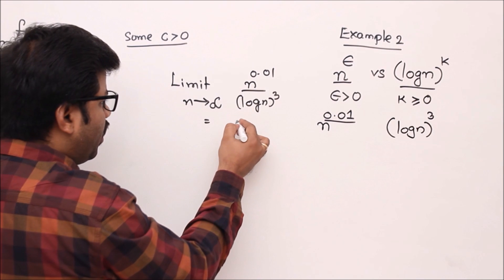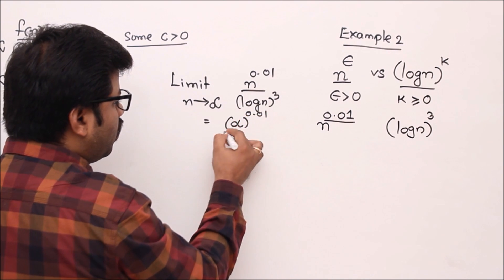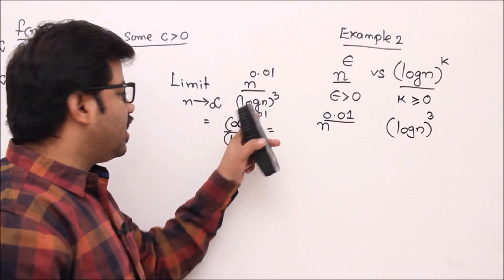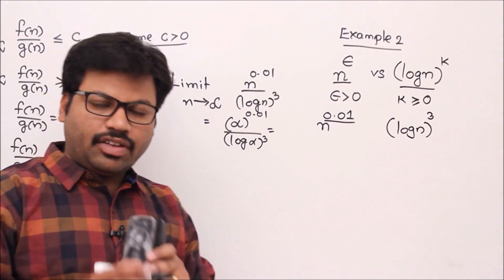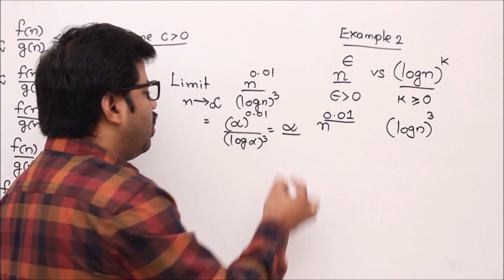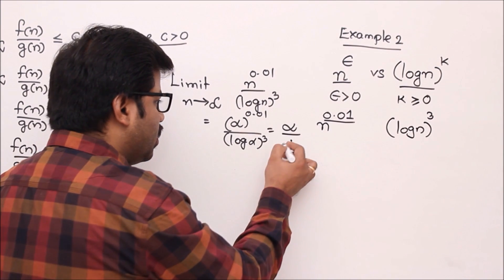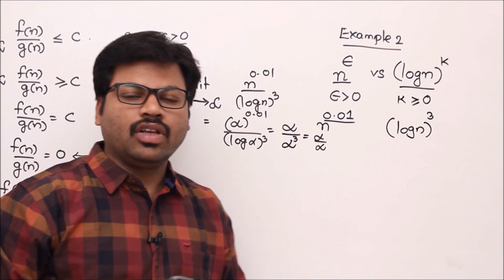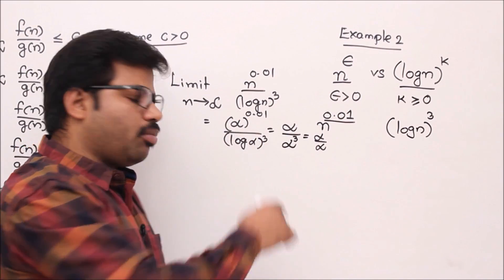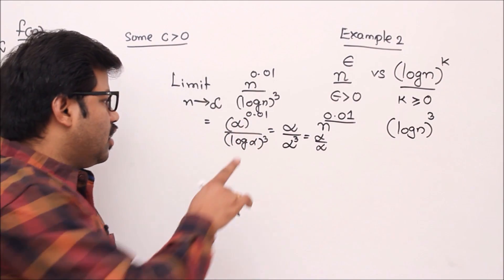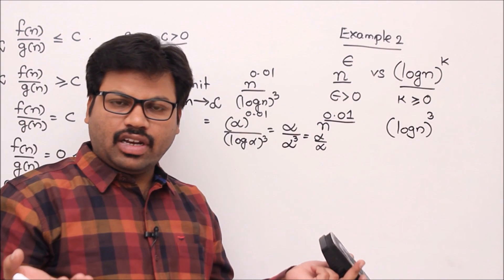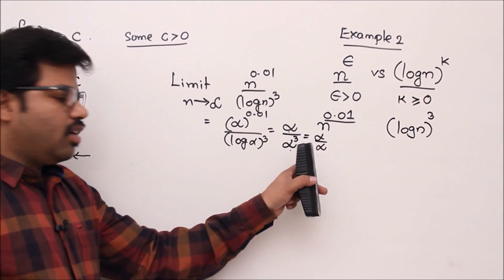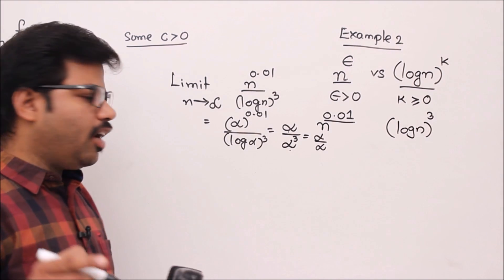Applying n = ∞: ∞^0.01 is infinite (any significant positive power of infinity is infinite), and (log ∞)³ = ∞³ = ∞. So we get ∞/∞, the indeterminate form. Whenever we get this form, we apply L'Hôpital's rule.